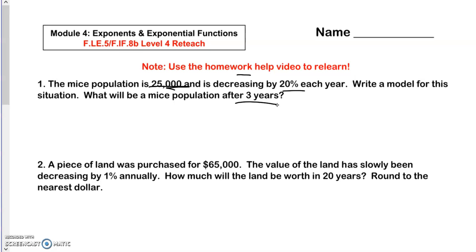After three years, we know that A is 25,000 and R, because it's decreasing, is going to be 1 minus 0.2 or 0.8, and my X would be 3. So when I do this, Y equals, I'm going to put this down as my equation.